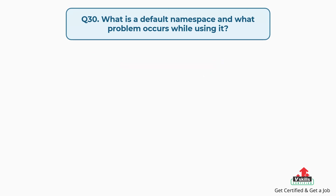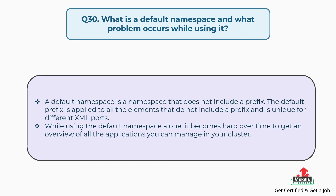Question number thirty: What is a default namespace and what problem occurs while using it? A default namespace is a namespace that does not include a prefix. The default prefix is applied to all elements that do not include a prefix and is unique for different XML ports. While using the default namespace alone, it becomes hard over time to get an overview of all the applications you can manage in your cluster.